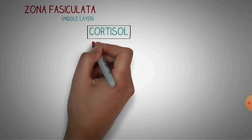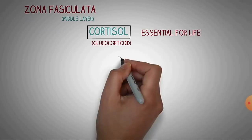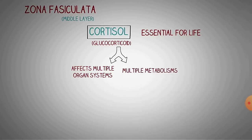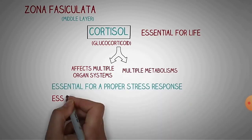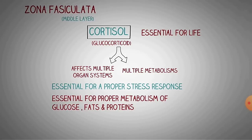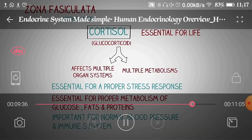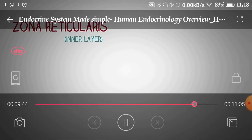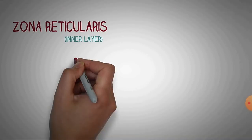The next is zona fasciculata, the middle layer, responsible for release of cortisol — a glucocorticoid. It is essential for various life functions and is released during stress. It has effects on multiple organ systems and metabolism, and is essential for proper stress management. Cortisol is also essential for proper metabolism of glucose, fats, and proteins, as well as normal blood pressure and immune system function. Whenever you are in stress, your immune system can be affected — mental and psychological state always has an effect on health.